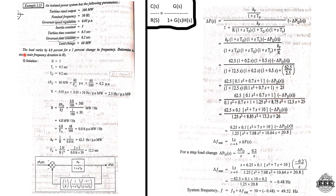The load varies by 0.8% for a 1% change in frequency. So if frequency changes by 1%, load varies by 0.8%. We then determine the steady-state frequency in hertz — what is the steady-state frequency deviation?